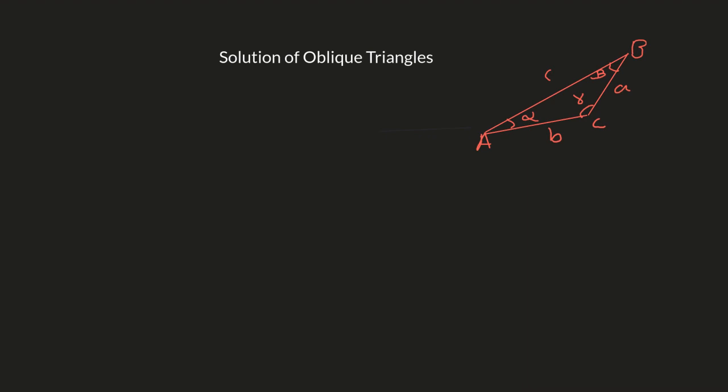We will learn how to use the law of sines: a over sin alpha equals b over sin beta equals c over sin gamma. Keep in mind alpha, beta, and gamma are the angles of a triangle. You can also denote the angles with capital A, capital B, or capital C. There are different cases for different questions, but today we will discuss case number one — when the measures of one side and two angles are given. In that case, we use the law of sines.